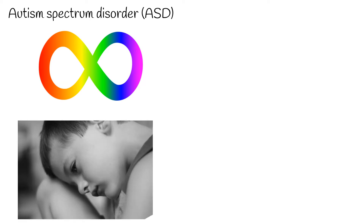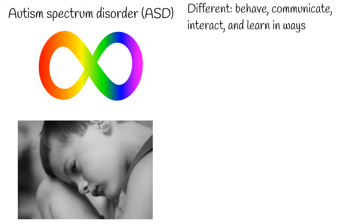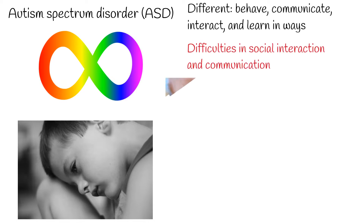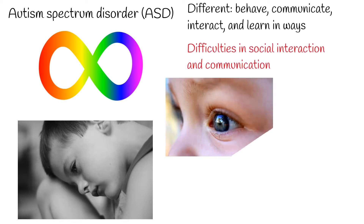Autism Spectrum Disorder, ASD, is a developmental disability caused by differences in the brain. People with ASD may behave, communicate, interact, and learn in ways that are different from most other people. The main characteristic of autism spectrum is difficulties in social interaction and communication. This condition is commonly referred to as autism, or among professionals, autism spectrum disorder or ASD.